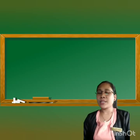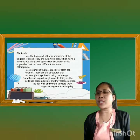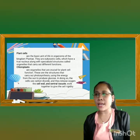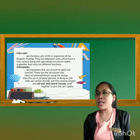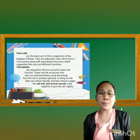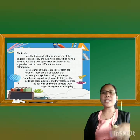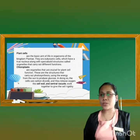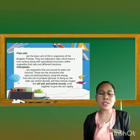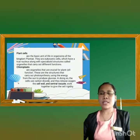Now we go to plant cells. Plant cells are the basic unit of life in organisms of the kingdom Plantae. They are eukaryotic cells which have a true nucleus along with specialized structures called organelles. Chloroplasts are organelles crucial for plant cell function — they carry out photosynthesis, using energy from the sun to produce glucose, consuming carbon dioxide and releasing oxygen. The cell wall and central vacuole work together to give the cell rigidity.